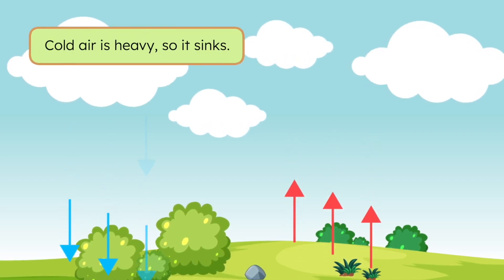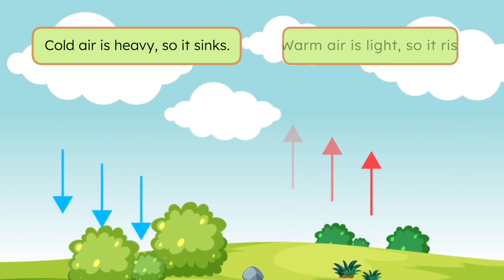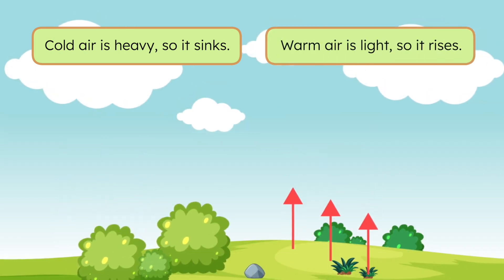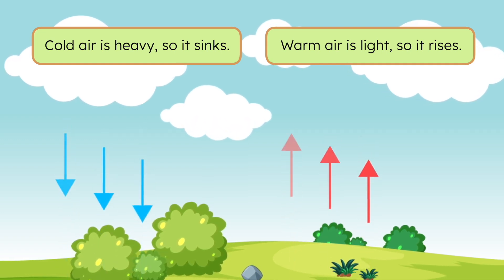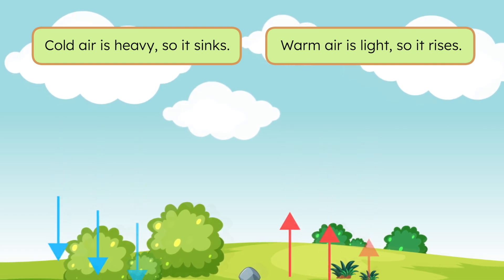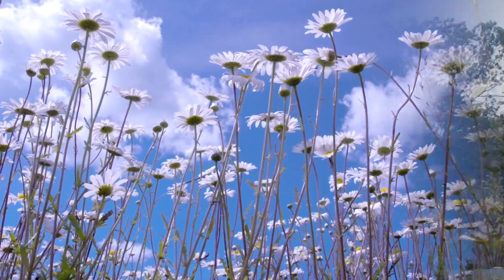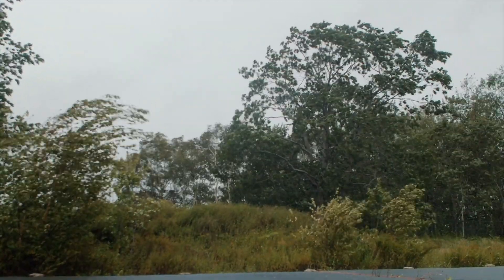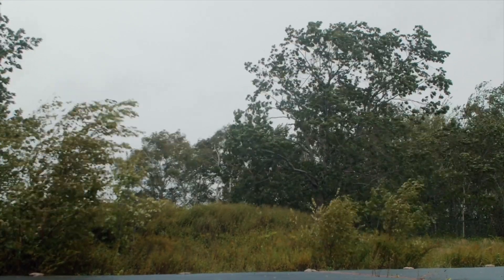When air is cold, it's actually heavier, so it sinks down toward the ground. Warm air is lighter, so it floats up higher in the atmosphere. When warm air rises and cool air sinks, it gets the air moving. That movement of air is what we call wind. Sometimes the air moves slowly, and we feel a soft breeze. Other times it moves quickly, and we get strong winds that can shake the trees. The bigger the difference in temperature, the faster the air moves.